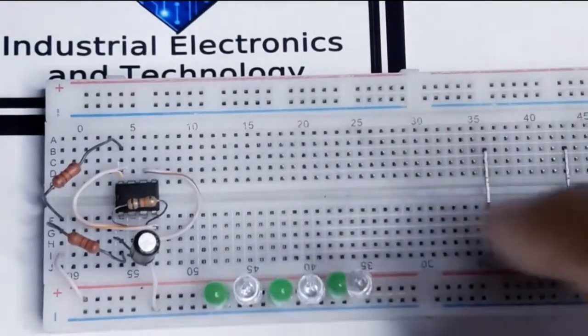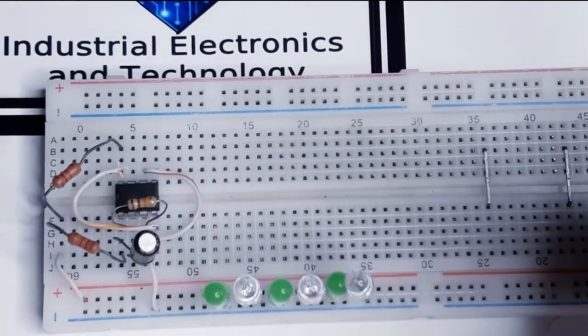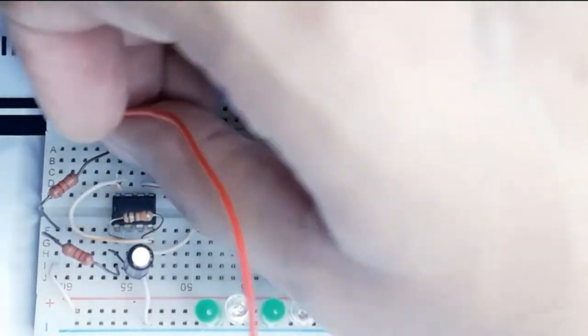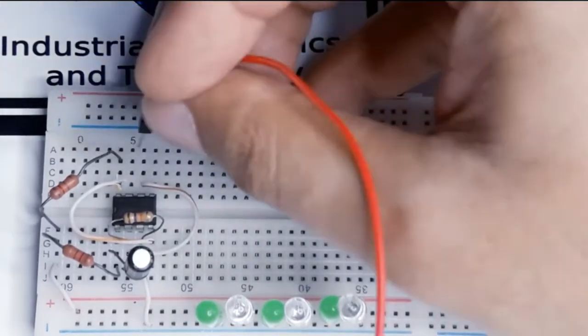So our circuit is ready. Now we have to apply the positive and negative of the 9 volt battery. The positive will go to pin number eight of the IC.